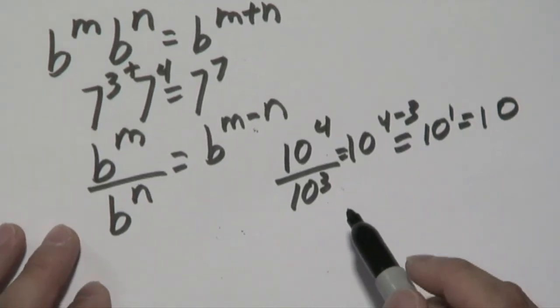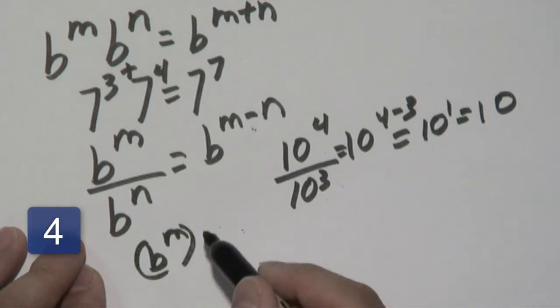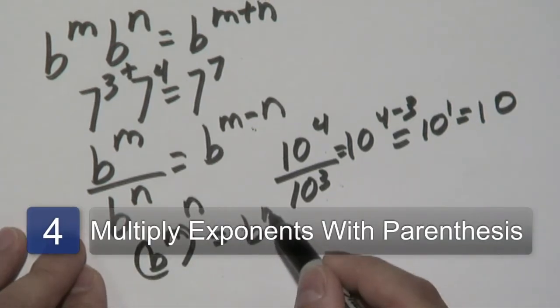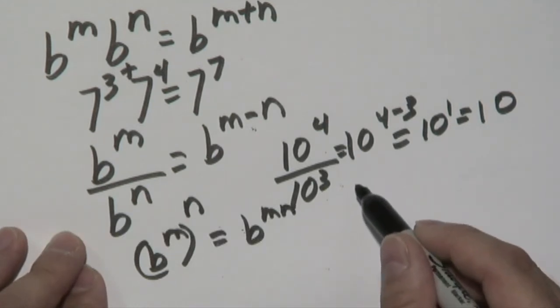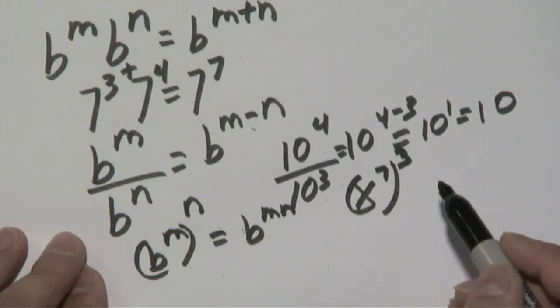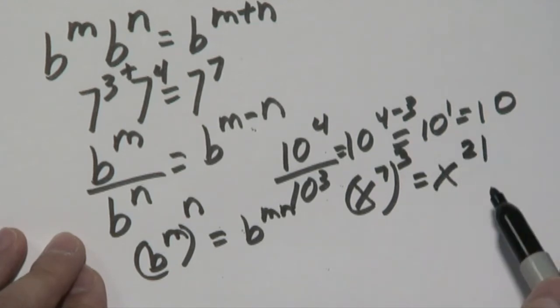Now another fundamental property would be if you have a base raised to a power, but in turn is raised to another power, you would actually multiply those exponents together. So for example, if you have x to the 7th raised to the 3rd, you would actually multiply 7 times 3, which gives you 21.